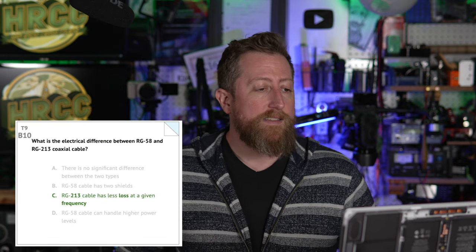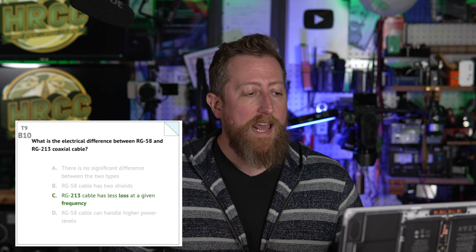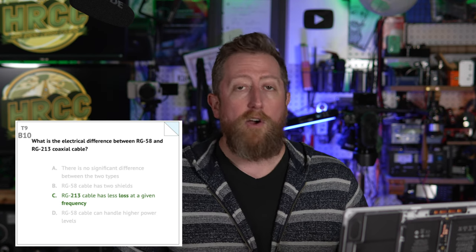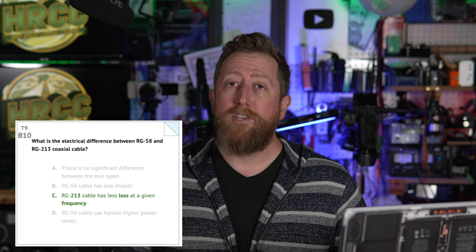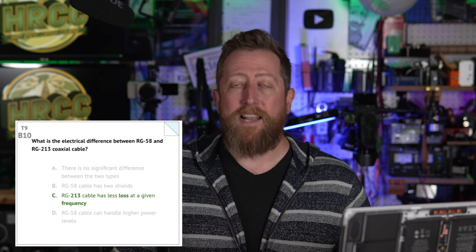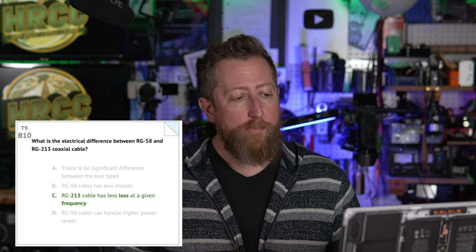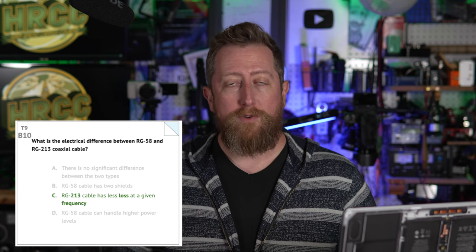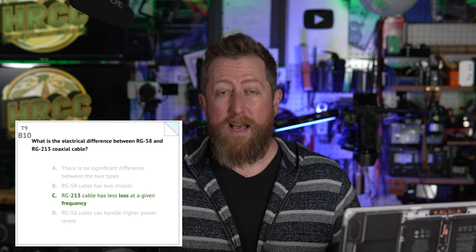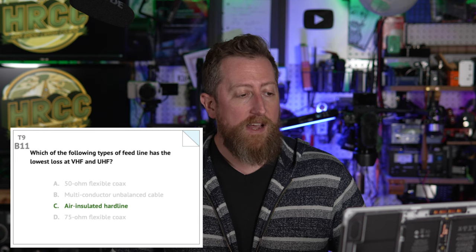Bravo 10: What is the electrical difference between RG-58 and RG-213 coaxial cable? Answer C — RG-213 cable has less loss at a given frequency. You're going to pay more for that privilege, but as you step up to better, more expensive coax, you expect losses at any particular frequency to be less. Bravo 11: Which type of feed line has the lowest loss at VHF and UHF? Answer C — air insulated hard line. This is expensive stuff that not many people run, but that is the answer.